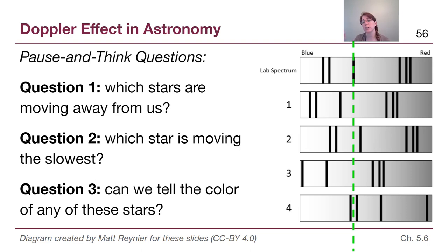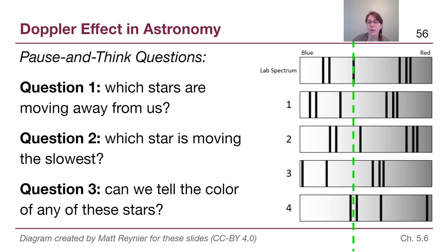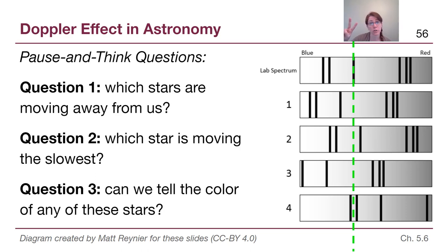In star three, the pattern has shifted so much towards the blue side that one of the lines is now off the end of the picture — that's towards us, not what question one is asking. Star four's whole pattern has shifted to the right towards the red side, so that is a star moving away from us. So for question one, the answer is star two and star four — both of those are moving away from us.